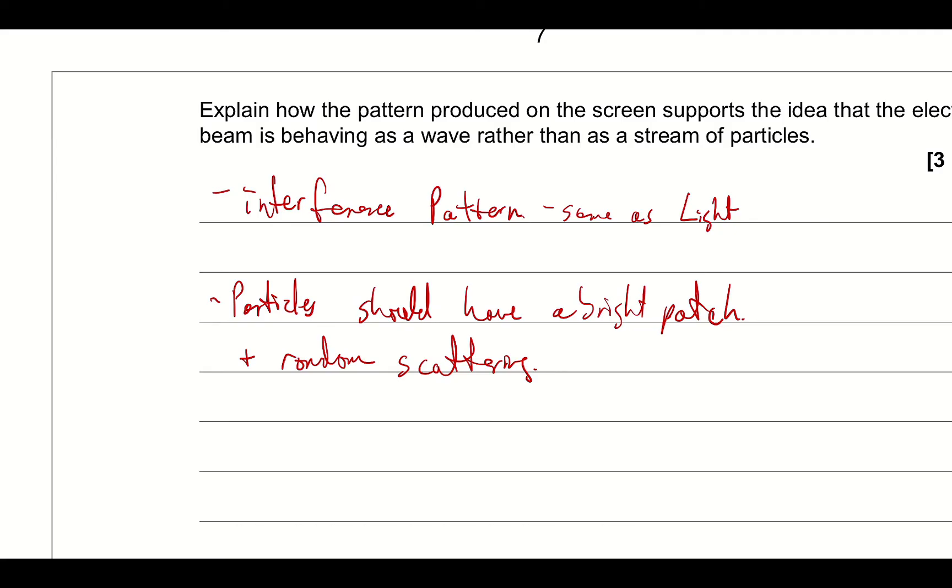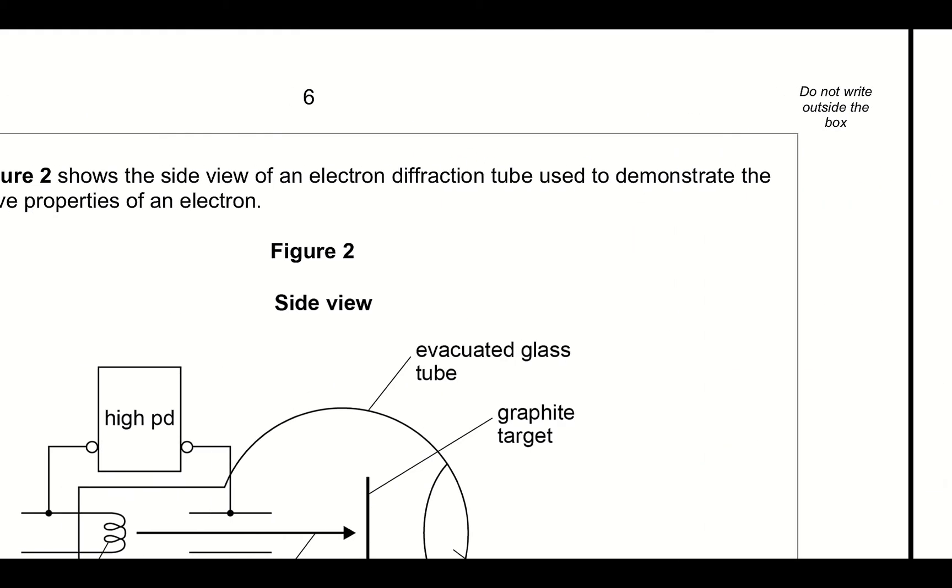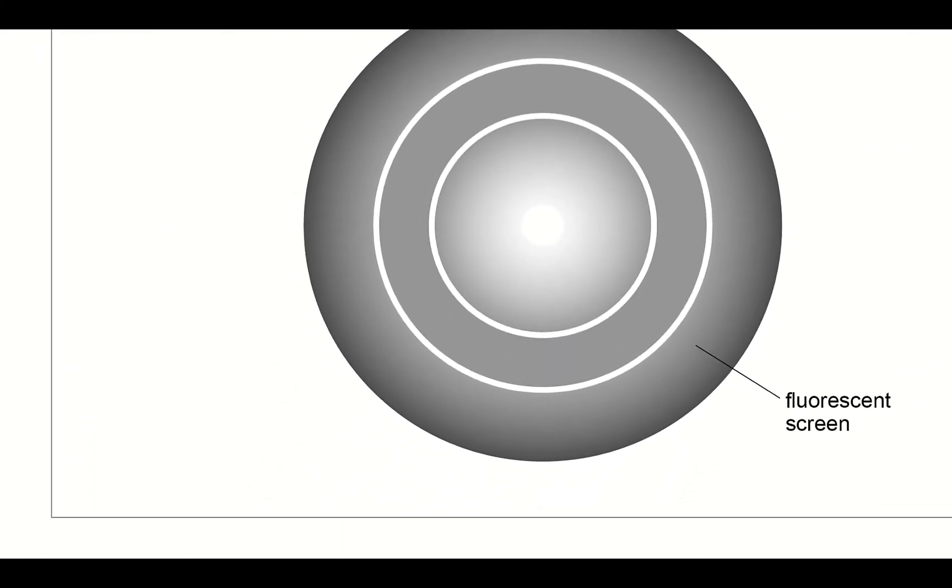And it's going to follow the diffraction grating formula. So you can go into more detail about describing the interference pattern that you have a bright spot where you've got the constructive interference and destructive interference. And it really is just because you're basically firing it through a diffraction grating.